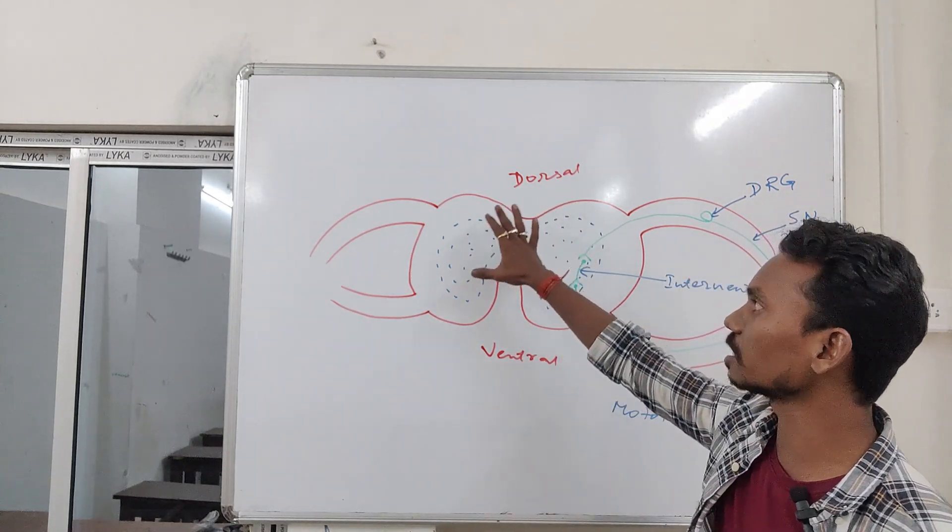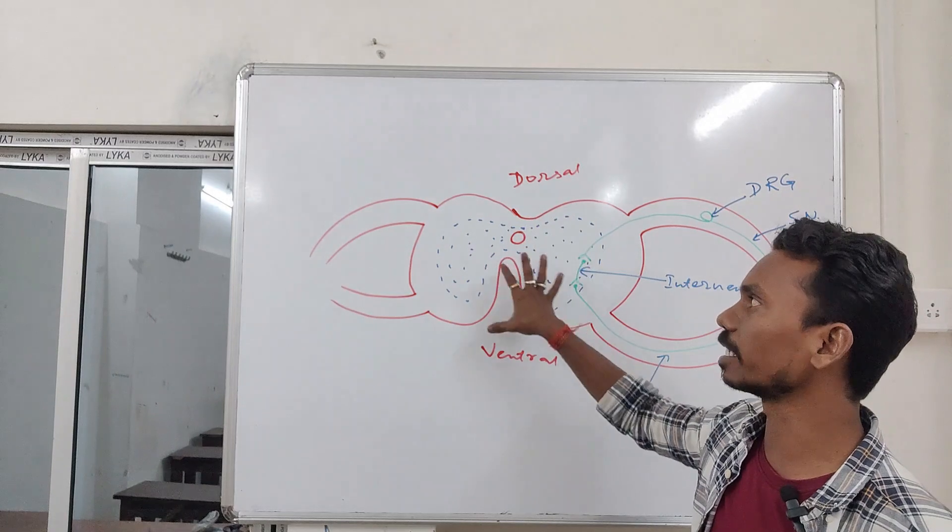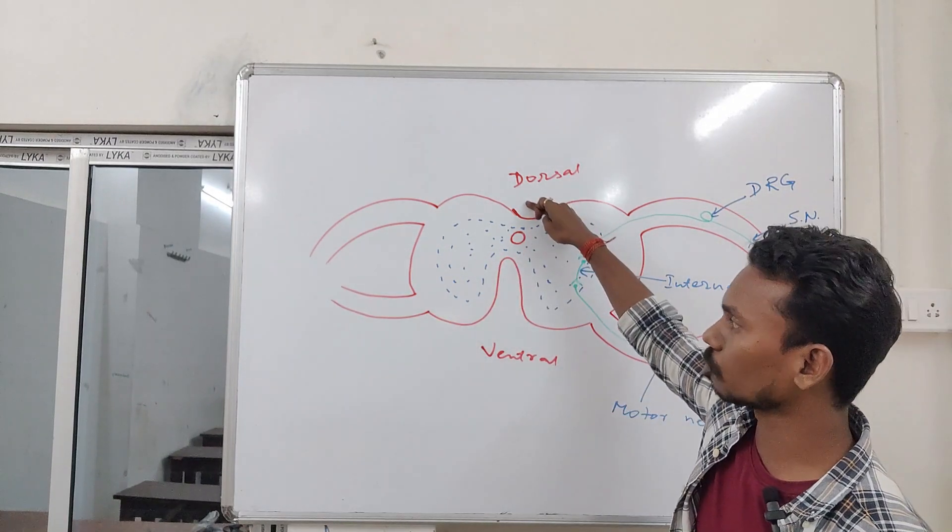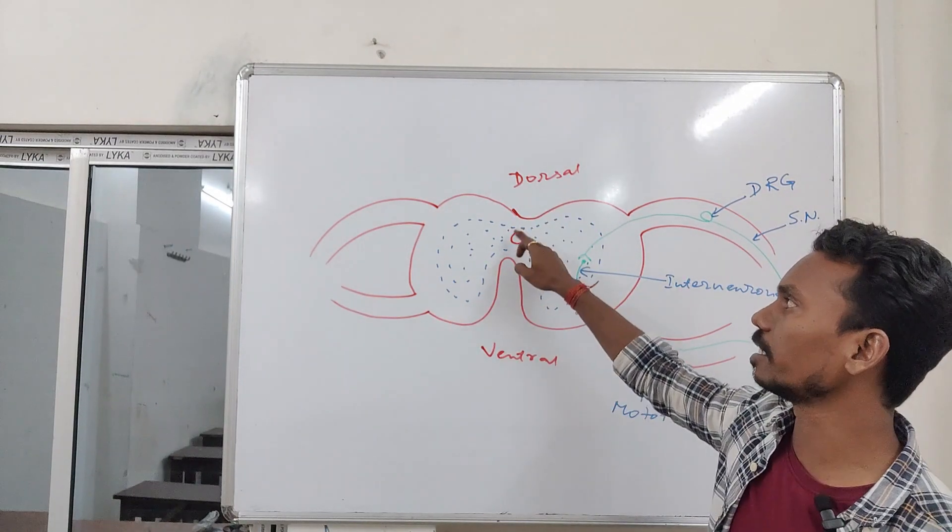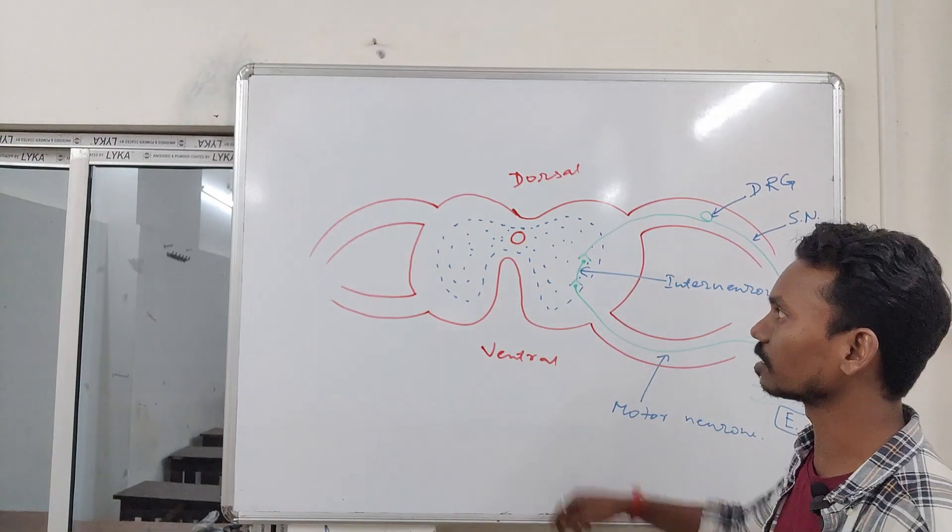If you see the transverse section of your spinal cord, it looks like this. This one is the dorsal part, this one is the ventral part, and in between the dorsal and ventral you can see the central canal.